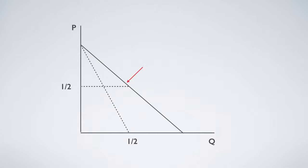Given a strict linear demand curve, if production cost is zero, a monopolist will produce half of the horizontal segment and capture half of the vertical segment.